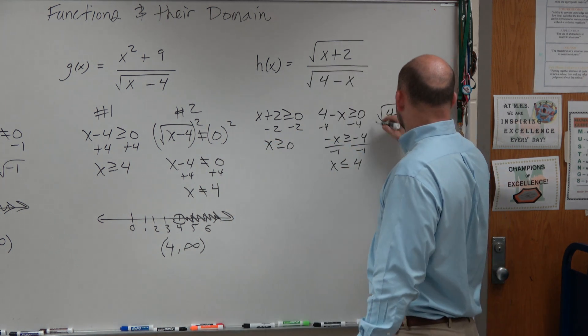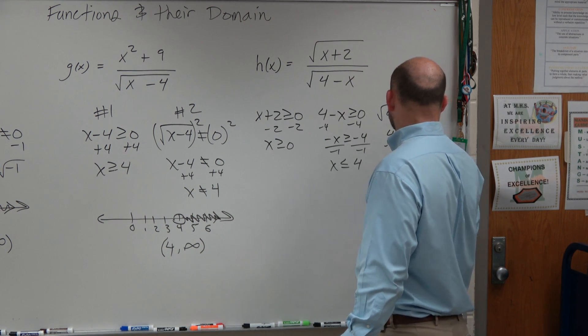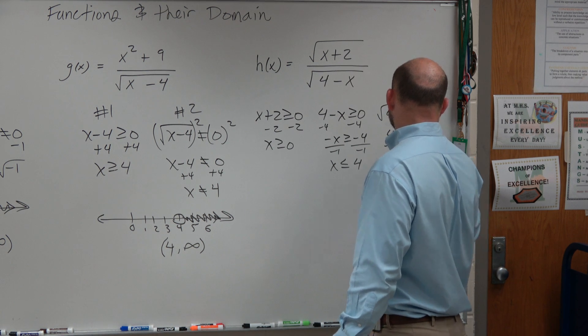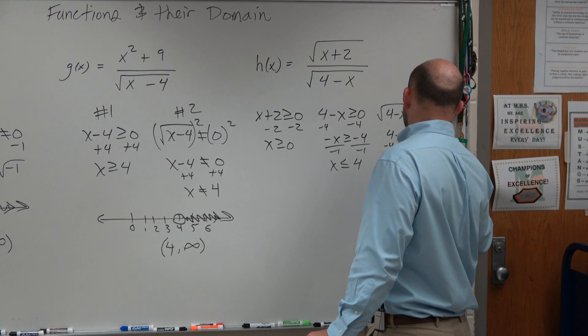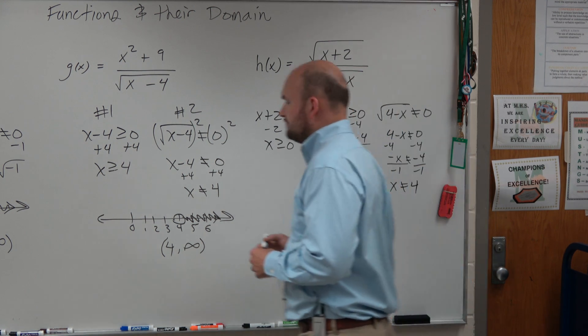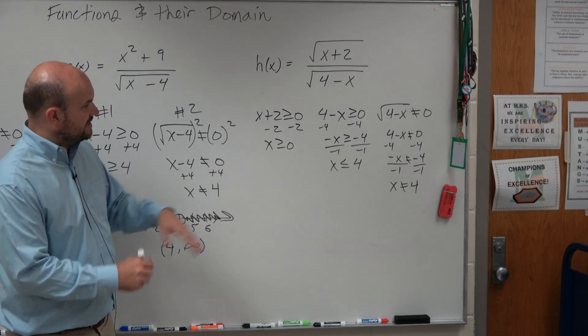And then over here, you're going to square. So 4 minus x cannot equal 0. Minus 4 minus 4. Negative x cannot equal negative 4. So I'm just doing my algebra work right there. So let's look at this.